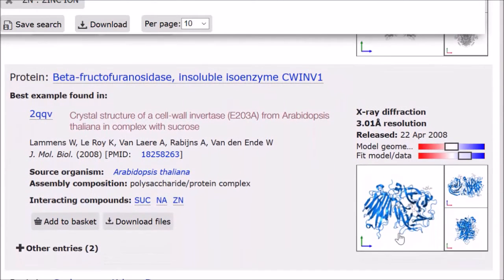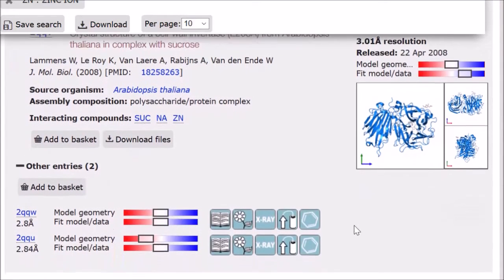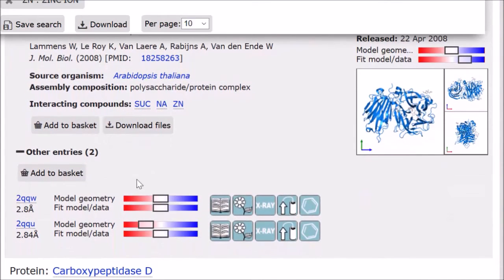Some macromolecules will have multiple entries. We give you the best example based on the validation score, and we also give you the other entries. These are ordered by best validation score to lowest, i.e., least outliers to more significant outliers.